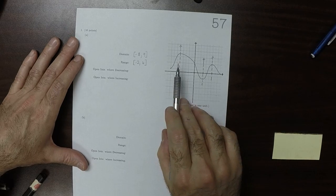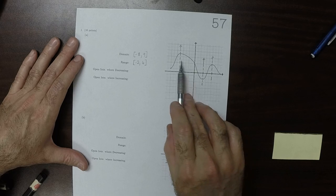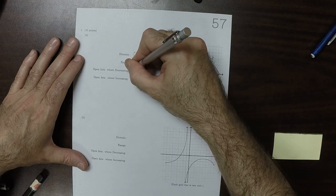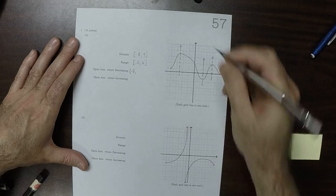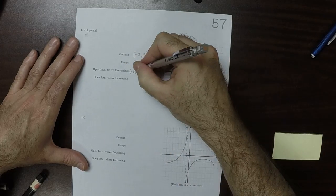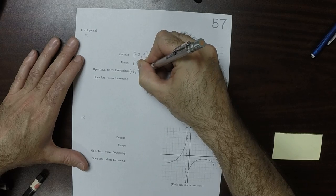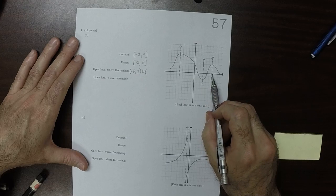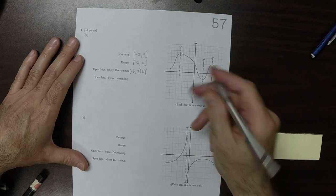So where is it decreasing on that piece? So that's negative 5 to 3, union 6 to 9.